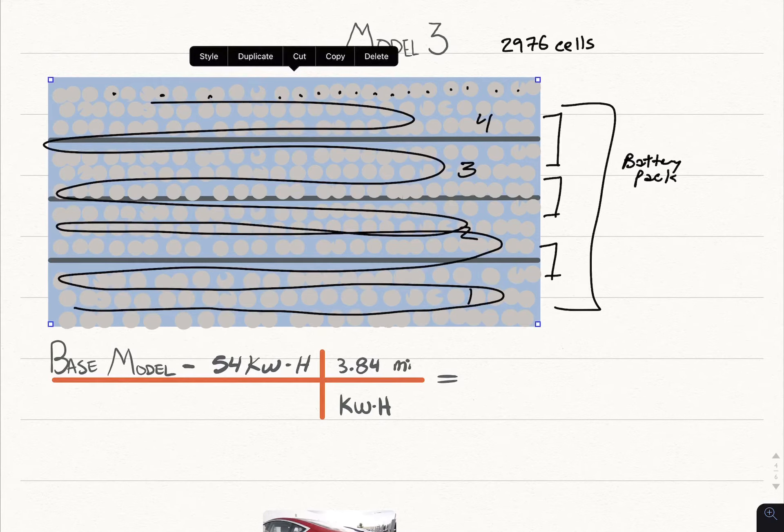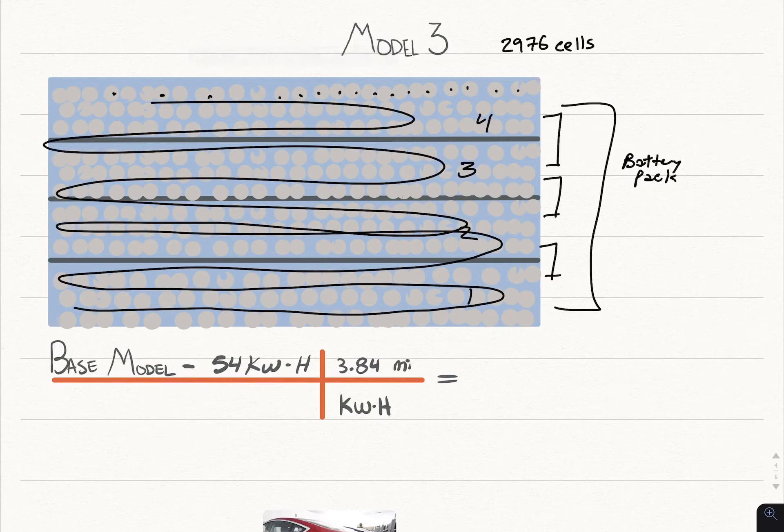Now the base model battery is rated for 50 kilowatt-hours. The EPA has said that a Tesla will go 3.84 miles per kilowatt-hour. So in this specific model you're going to get 207.36 give or take miles of range before you need to charge up your battery again.